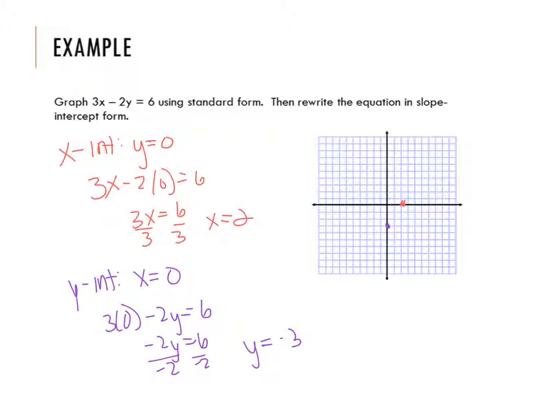So once you have your two intercepts, then you are welcome to use your straight edge, draw a line. Voila, you're done. See, quick. We're going quick.